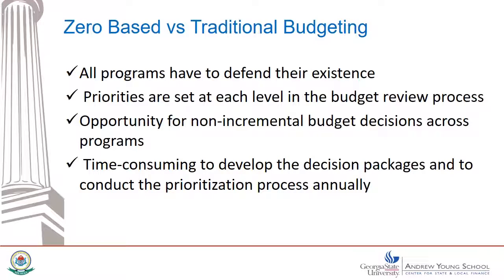Zero-based budgeting makes each program defend its existence. Priorities are set at each level in the budget review process. At each level of review, up to and including the top level, there's a strong possibility of zeroing out some elements of current spending as the organization's priorities change. A criticism of zero-based budgeting is that it's very time consuming to develop the decision packages and to conduct the prioritization process annually. In conclusion, budget allocations can be made with different budget designs — there's no one best way; it depends on what the organization wants to do. The line item budget is more control oriented, while all other budget designs require more interpretation as they move toward goal-oriented evaluation budgeting. Remember that you can change budget formats over time — if one isn't working for your organization, you can always implement another.